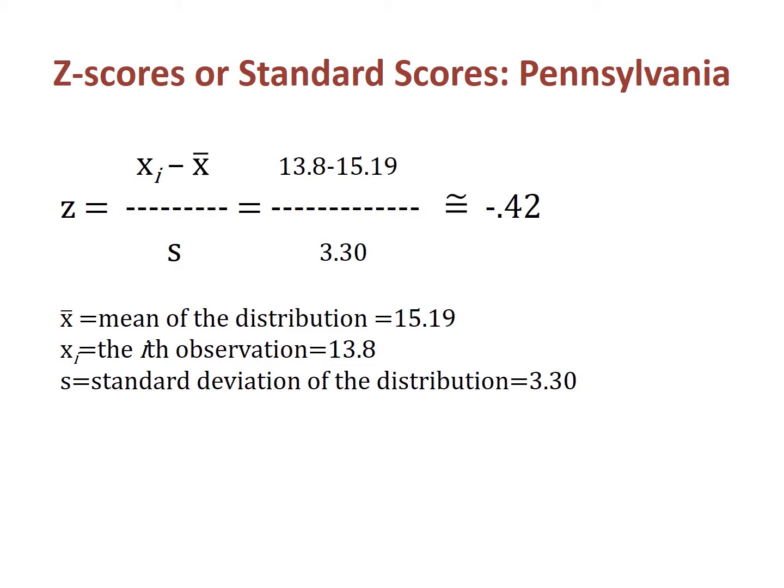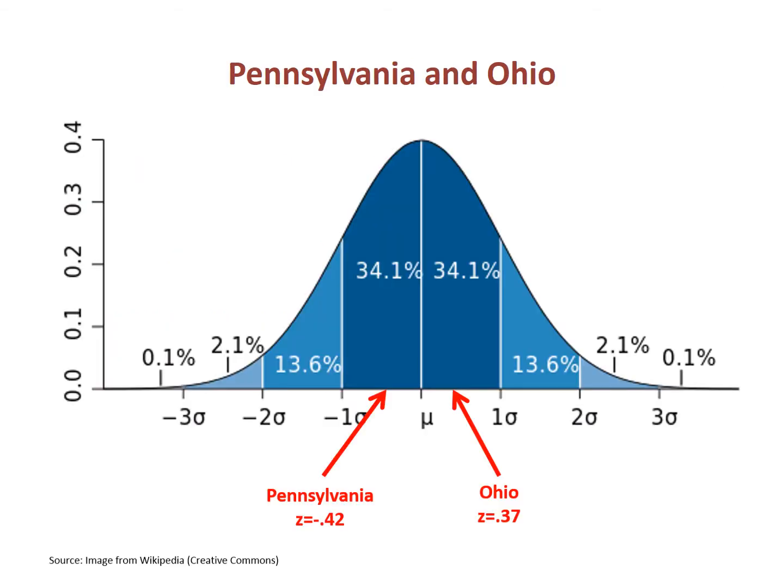Whether the z-score is positive or negative depends on the relationship of the observation to the mean. Ohio has a poverty rate greater than the national mean, so its z-score is positive. Here is the calculation for Pennsylvania. Pennsylvania's poverty rate is less than the national mean, so its z-score is negative. With this information, the location of the values of these states can be pinpointed on the standard normal curve, and their approximate location is shown here.